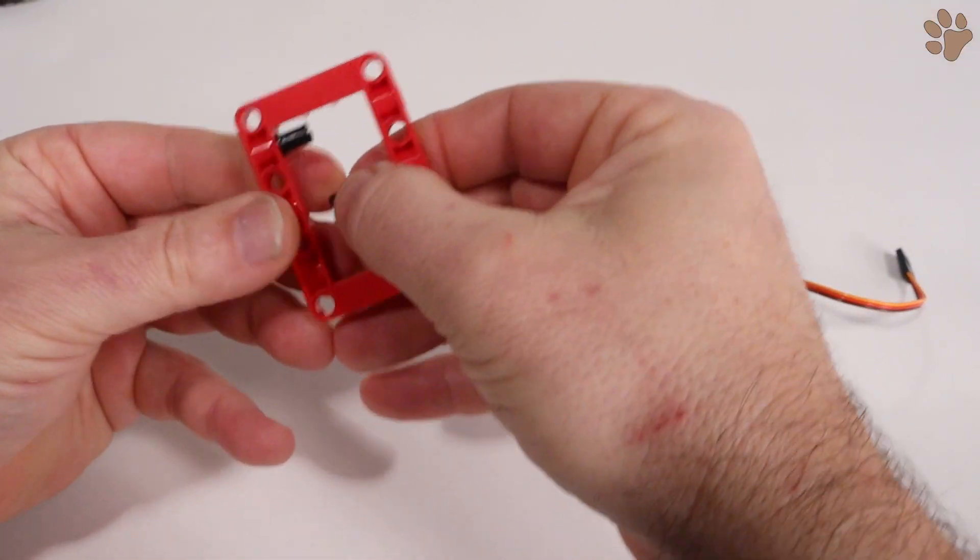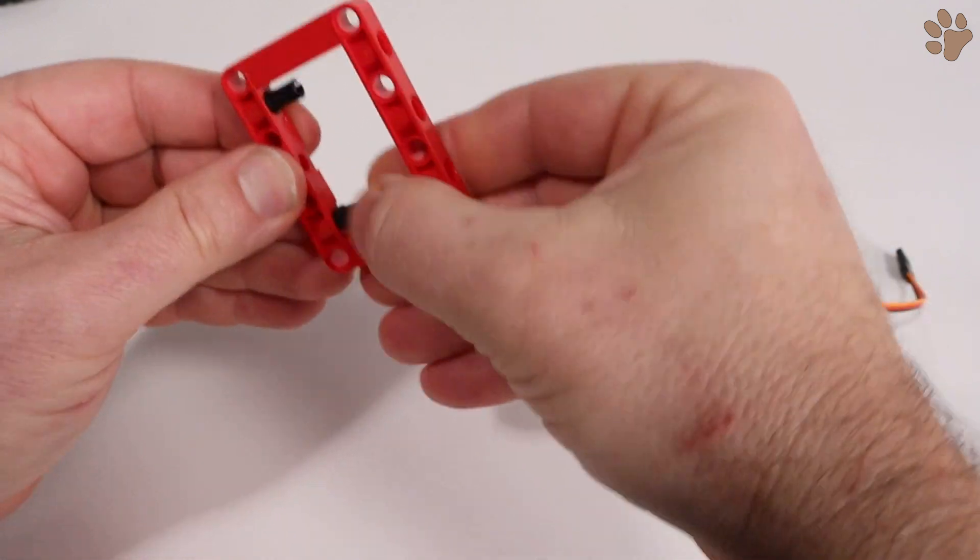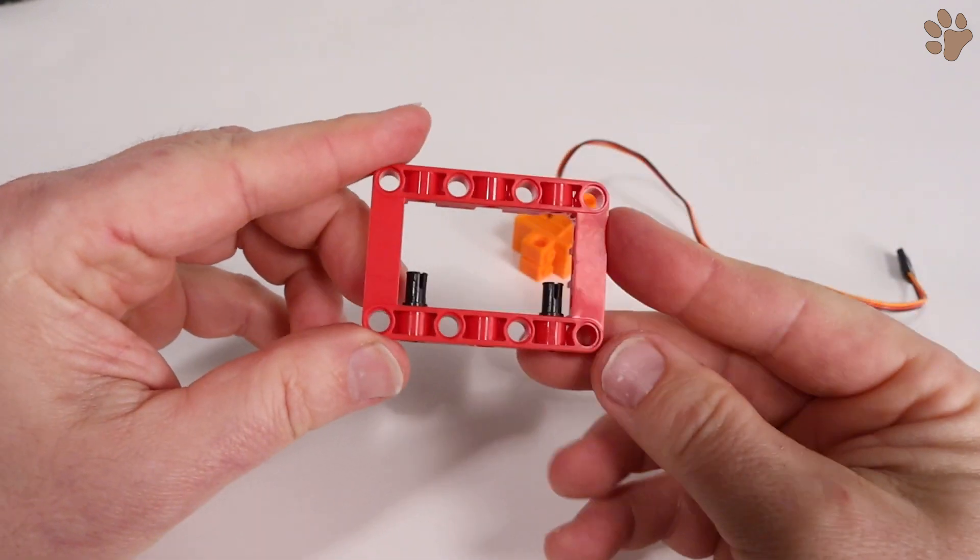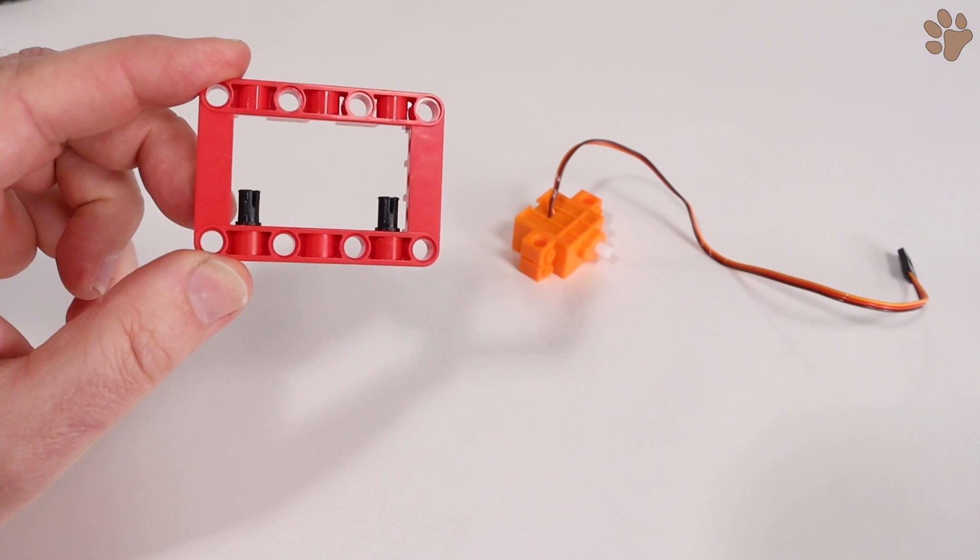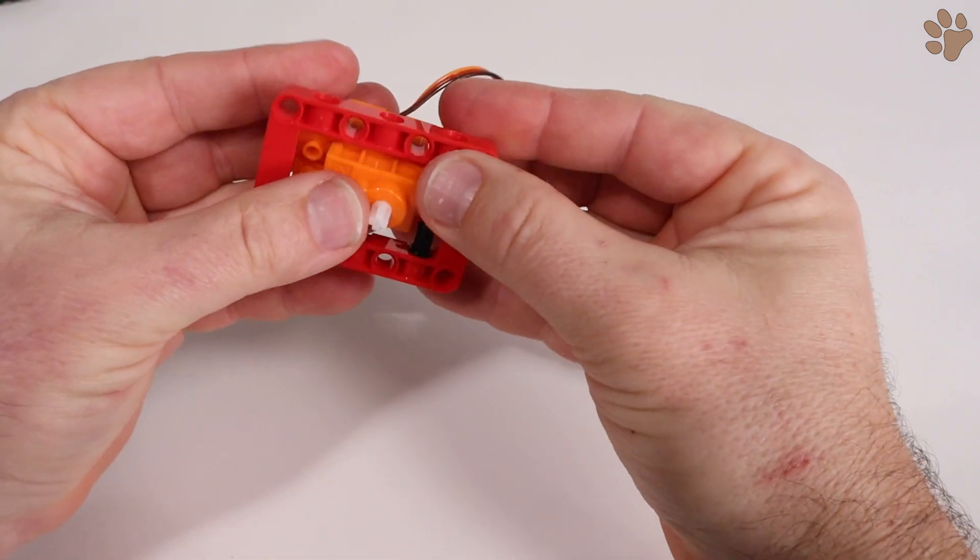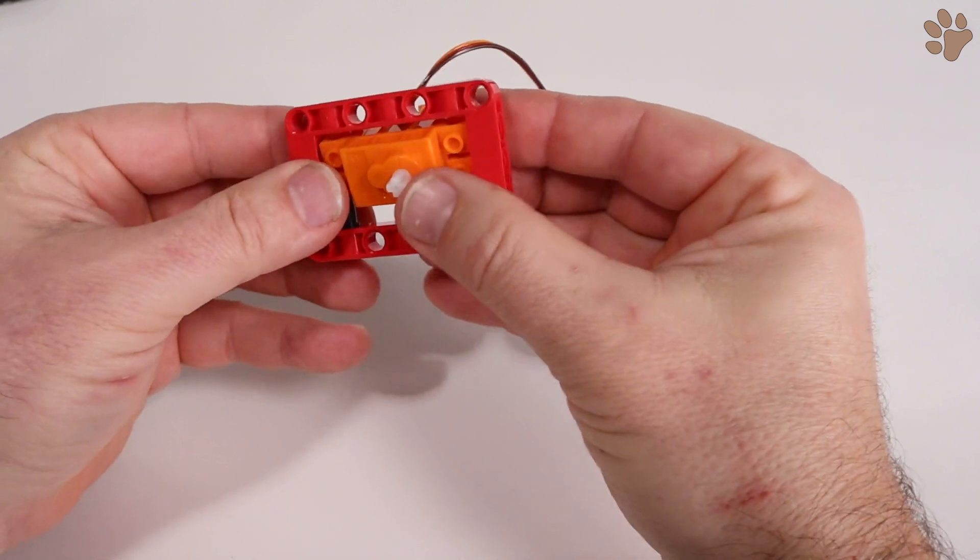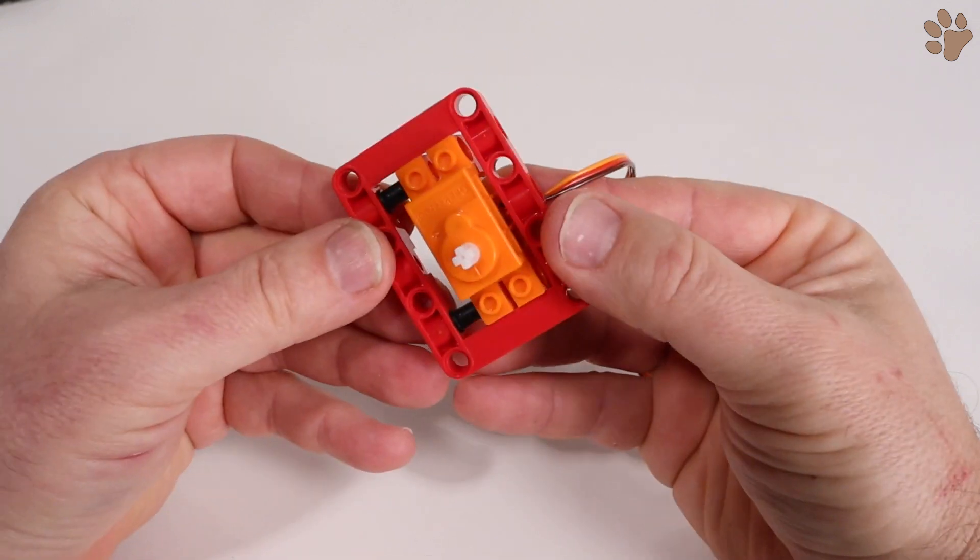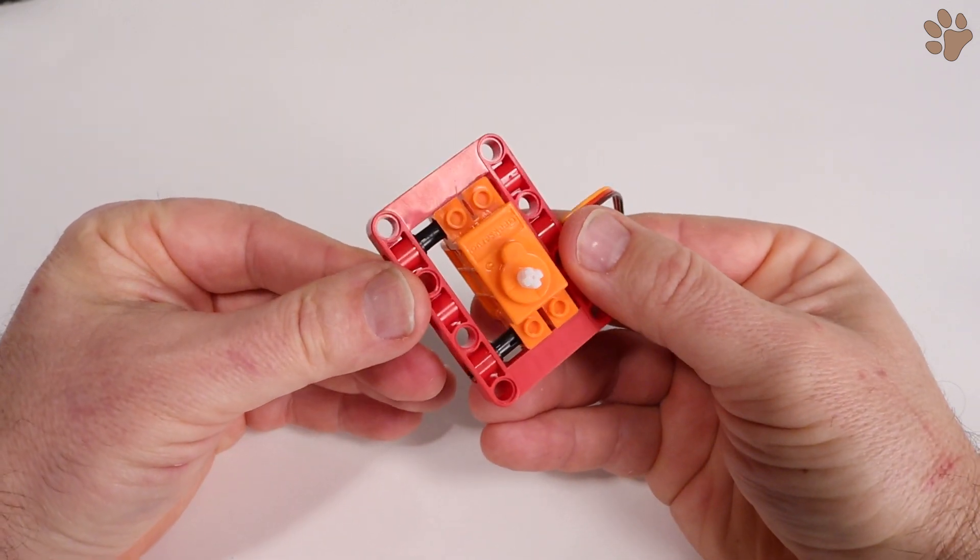Insert the pins on the inside of the red frame. Next, slide the servo into the red frame and then slide it down onto the black pins.